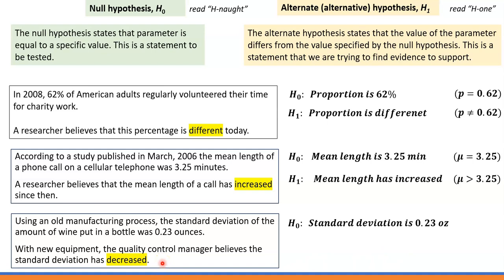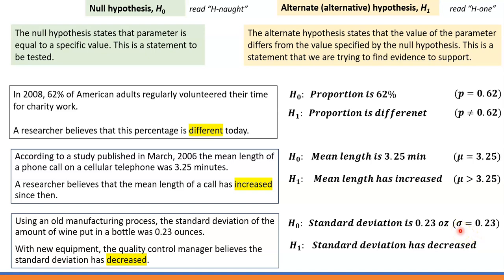With new equipment, the quality control manager believes the standard deviation has decreased. The null hypothesis states the parameter equals a specific value. This time it has decreased. Using short notation: H0: sigma = 0.23, where sigma denotes population standard deviation. For H1, we use the less-than sign: sigma < 0.23. That's how we determine the null and alternative hypotheses for each example.